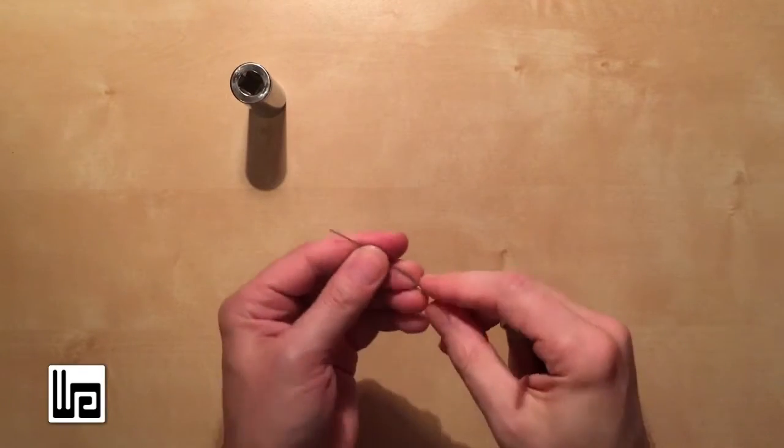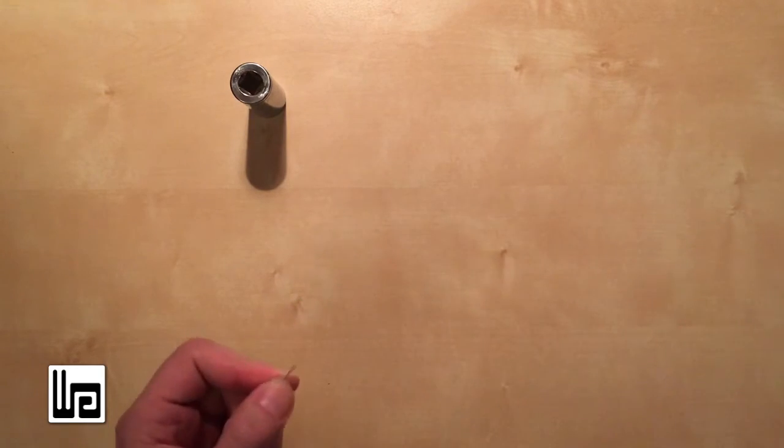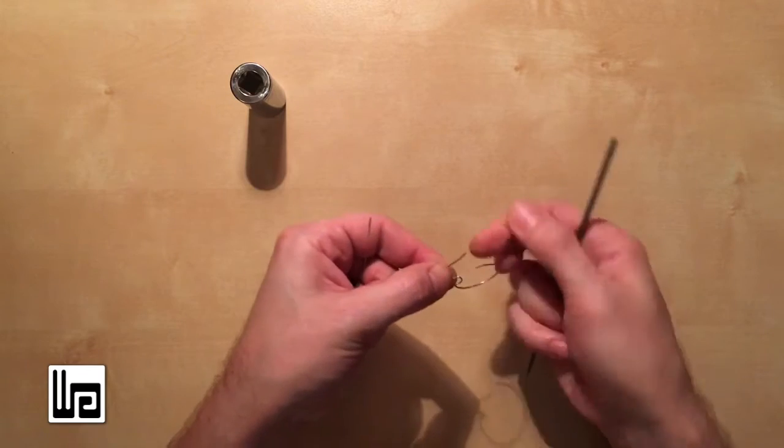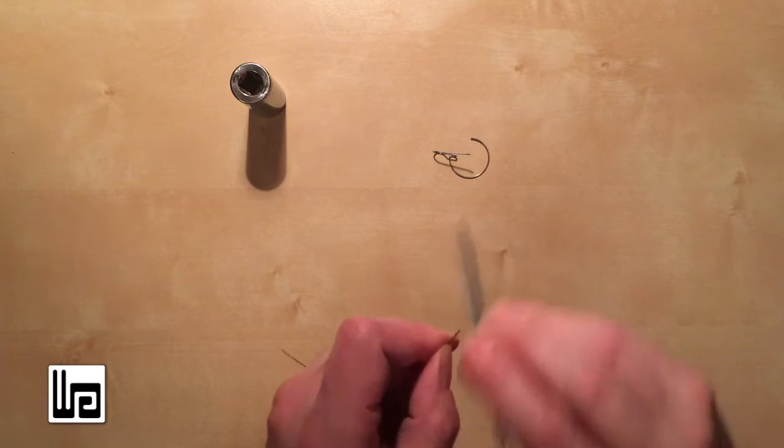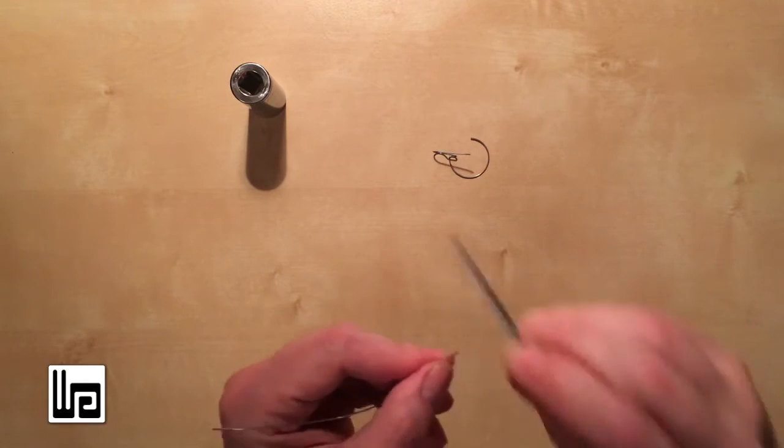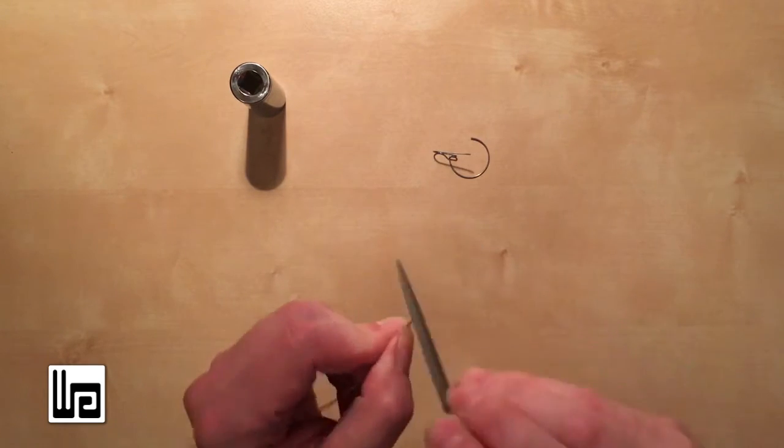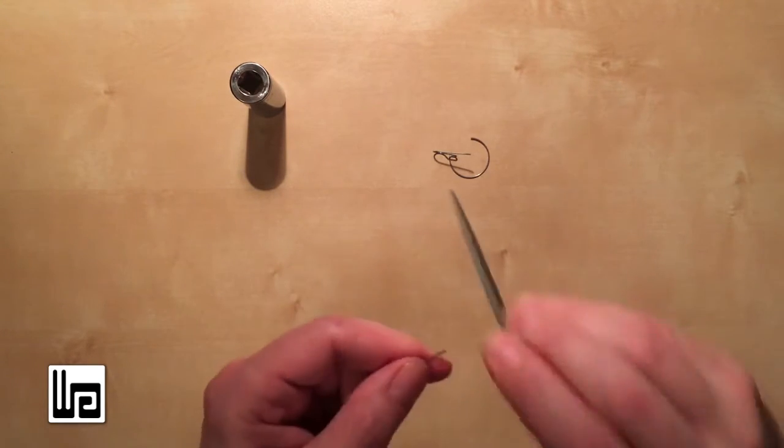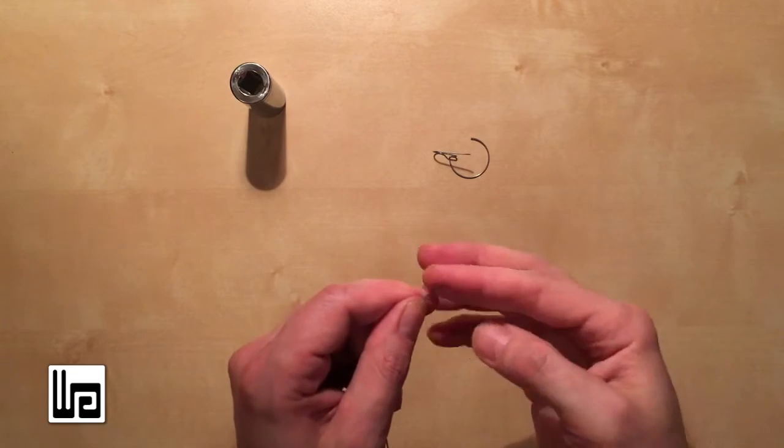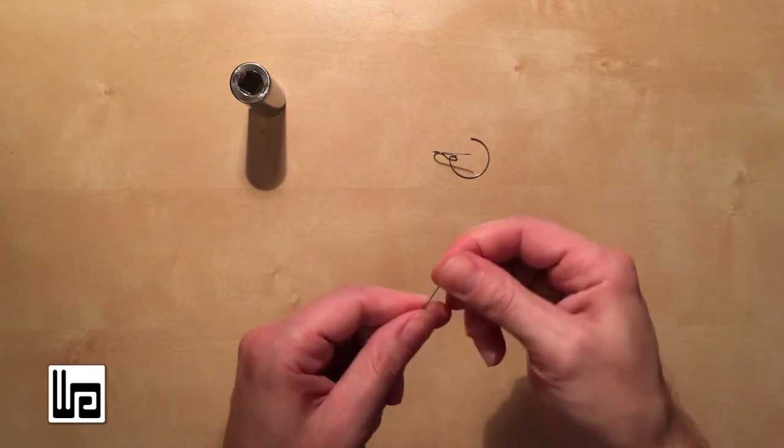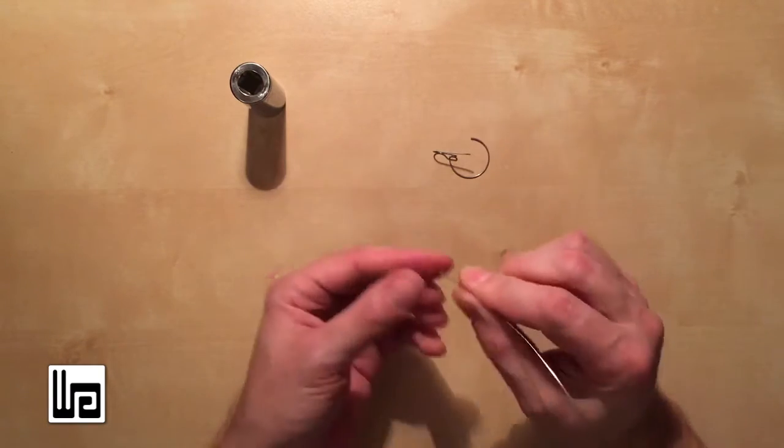And the last one is an ear wire. So I use a file to file a tip, because that's going to be this part of the ear wire. I don't want people to get their ears all cut up. Just kind of go all the way around. So it's nice and smooth. It's pretty good. And if you have a polishing cloth, you can just put it on the table and kind of go and it'll smooth it out a lot more.